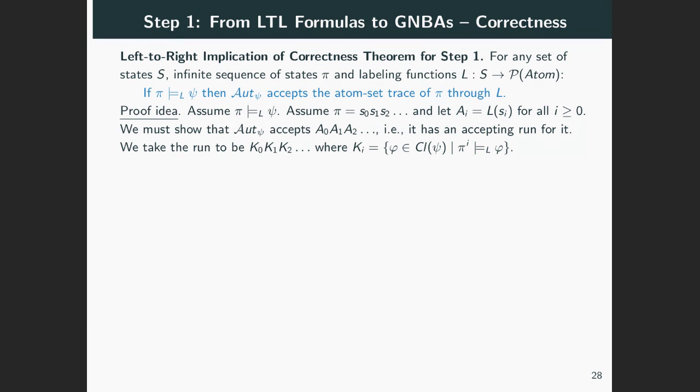Our run will actually be K₀, K₁, and so on, where Kᵢ consists of all formulas in the closure of ψ that are satisfied by the i-suffix of π. So why is this a run? For it to be a run, first we need each Kᵢ to be a state in our automaton, that is, be in the set Q, which means be an elementary set of formulas.